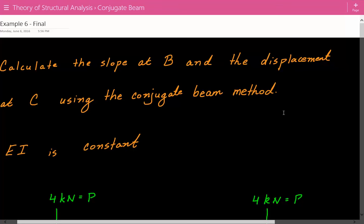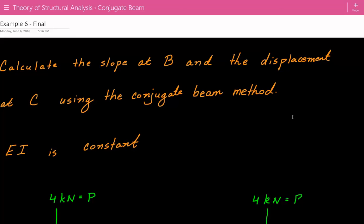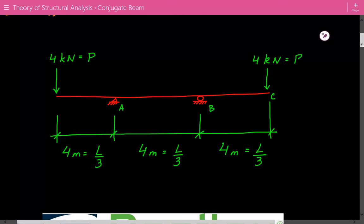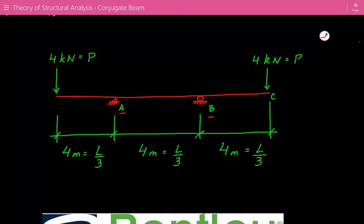This is example number six for structural analysis of slopes and deflections using the conjugate beam method. The problem asks us to calculate the slope at point B and the displacement at point C using the conjugate beam method, where EI — Young's modulus times the moment of inertia — is constant. We have a pin support at A, a roller support at B, and a free end at point C on the right. There are overhanging spans on each end with a concentrated load P equal to 4 kN at both ends, and the total length is 4 + 4 + 4 = 12 meters, which we call L.